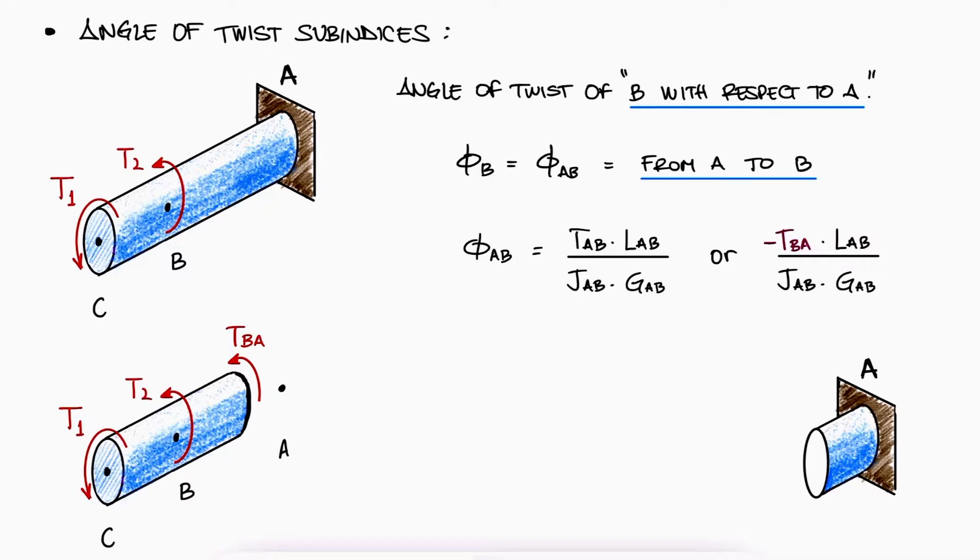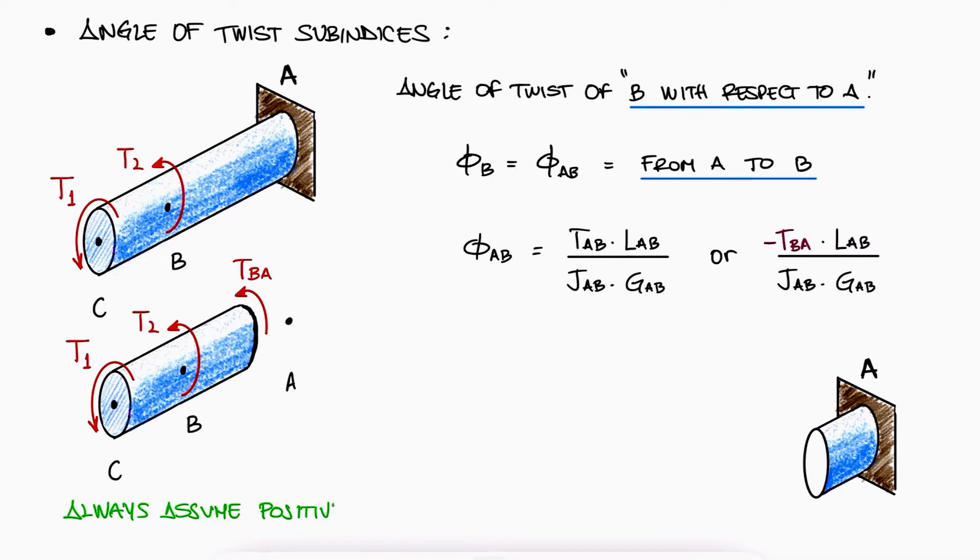Now, notice that even though it's pretty obvious that the internal torque BA should be oriented clockwise, we should always draw unknown internal torques as counterclockwise, and therefore positive torques.